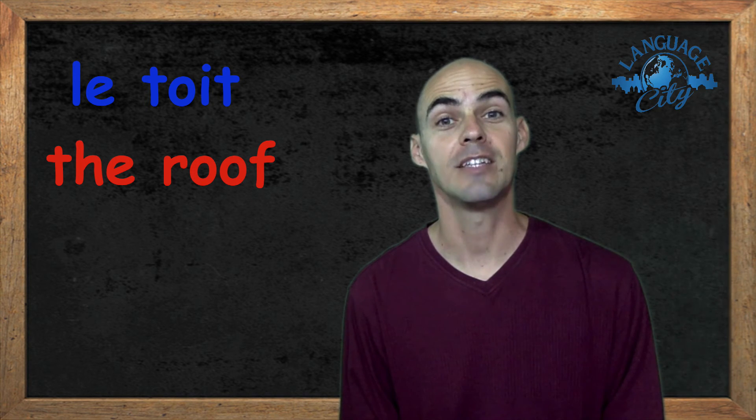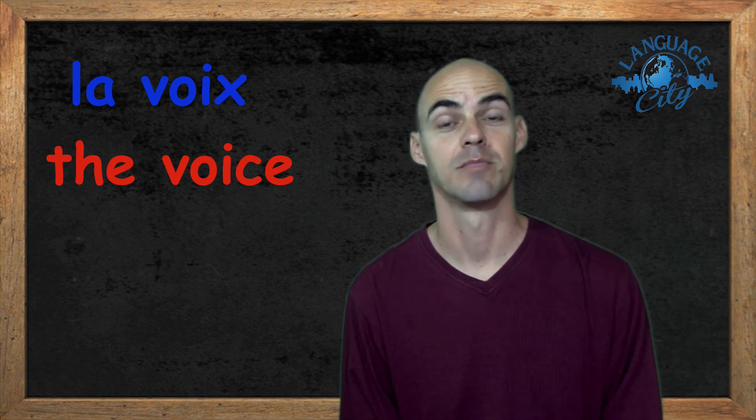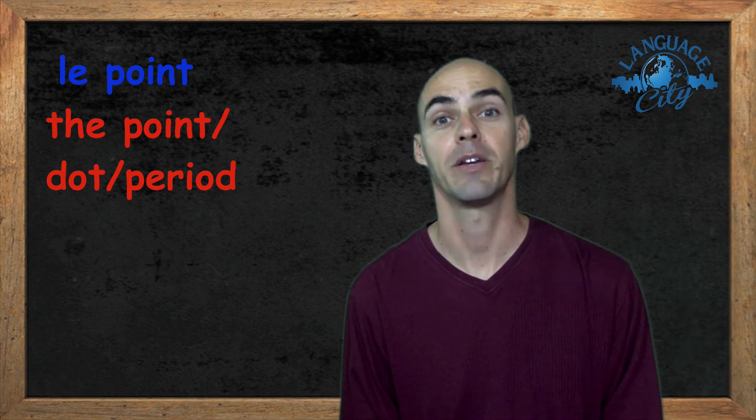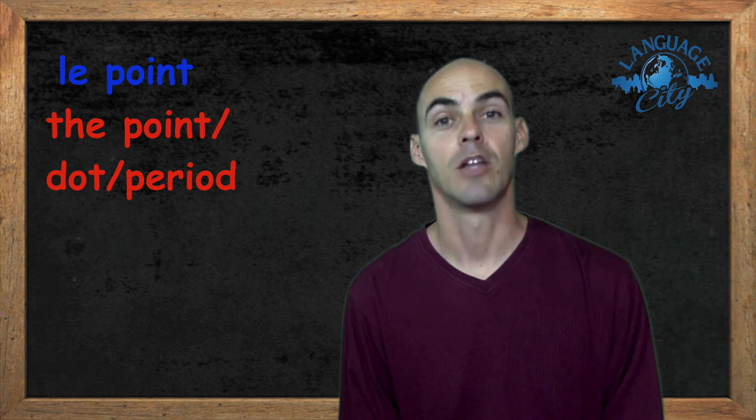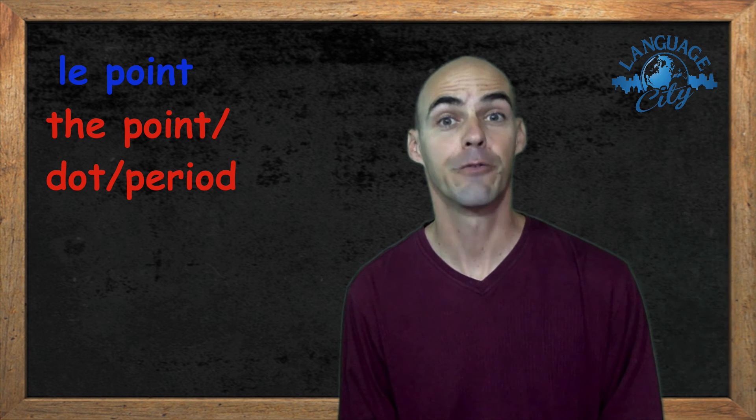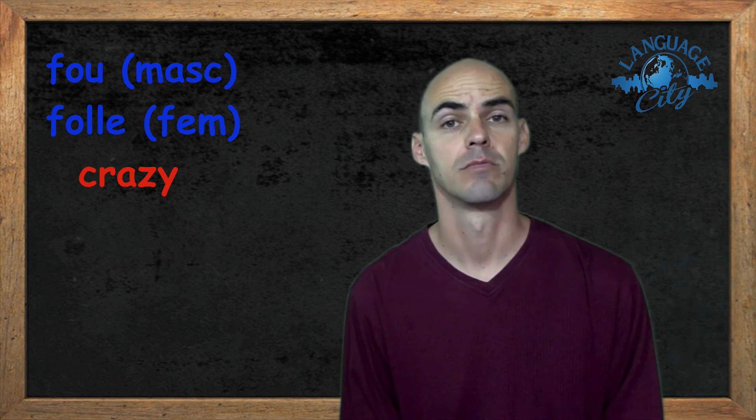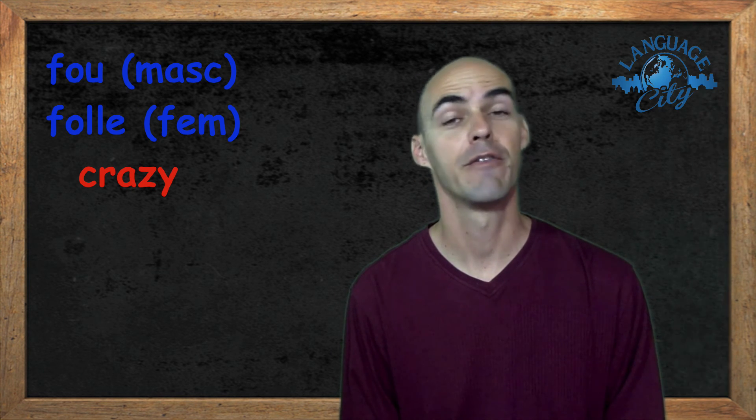Number eighteen was la voix, the voice. Number nineteen was le point, the point, the dot, or a period. Number twenty was the adjective fou, which means crazy. The feminine is very irregular, it is folle. So fou masculine, folle feminine.